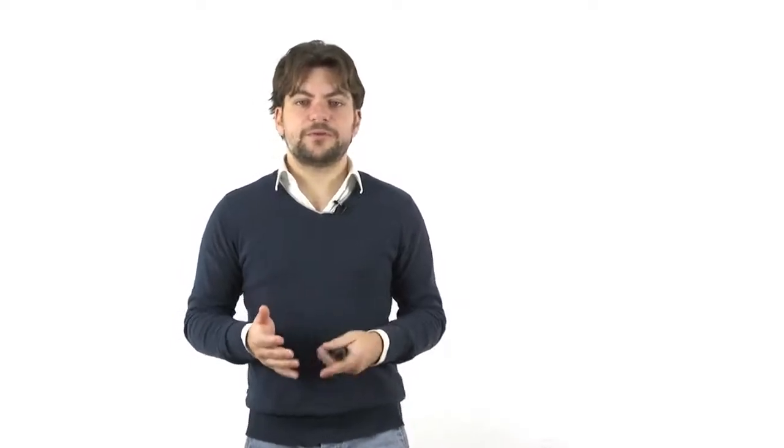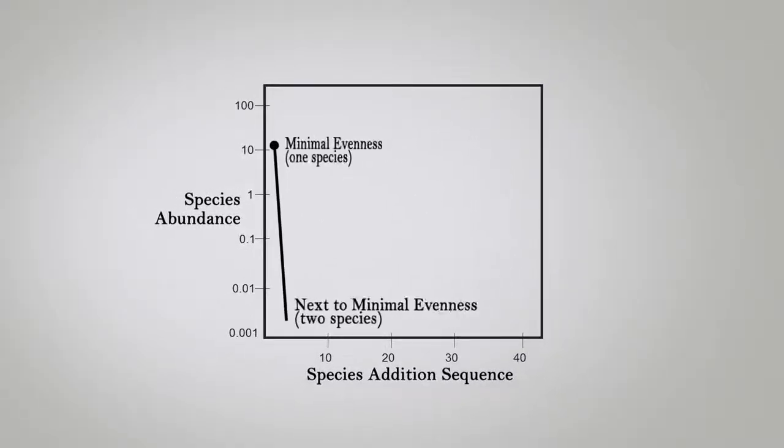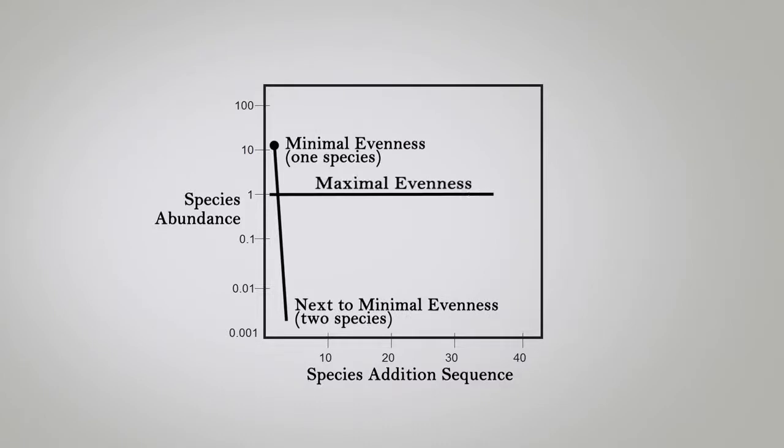We see that there is a decreasing dominance of a single species from model 1 to model 4. If we try to figure out how these hypothetical model curves appear, if the maximum evenness would be there, you will see that this is just a straight line parallel to the x-axis. And when there is minimal evenness, only one species in the sample, we will see that it is a straight line almost close to the parallel line of the y-axis.